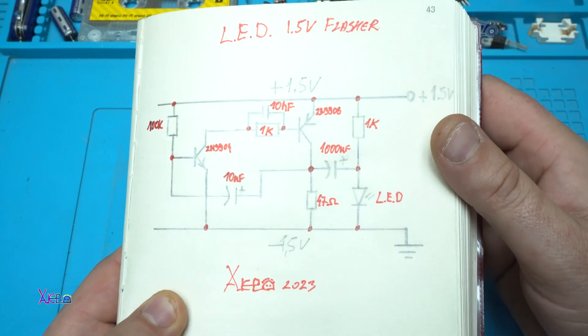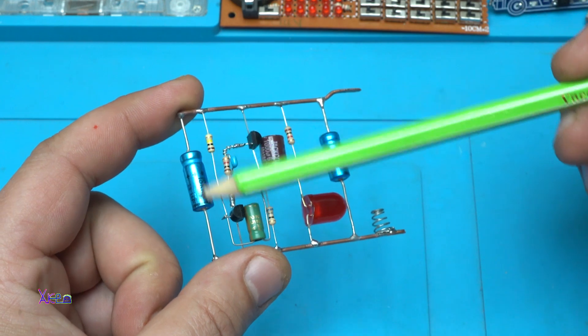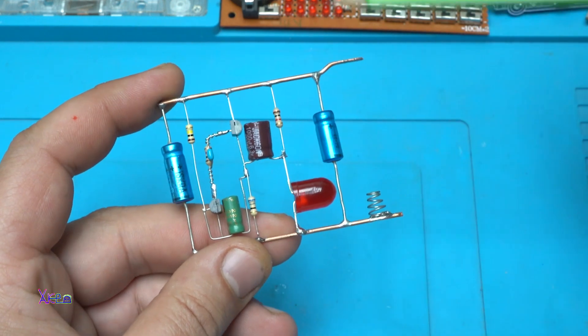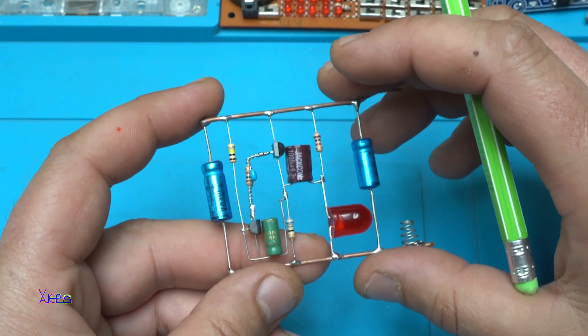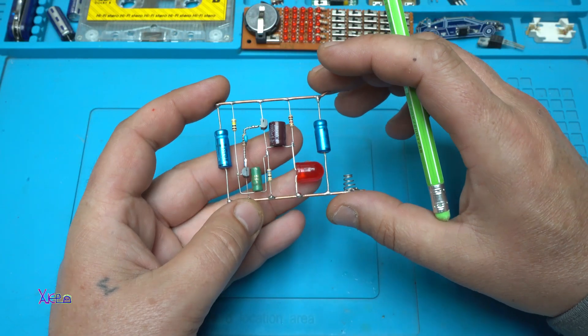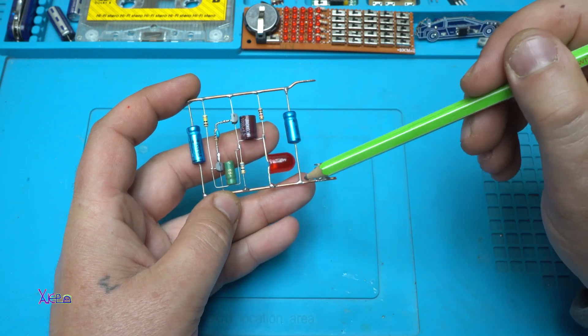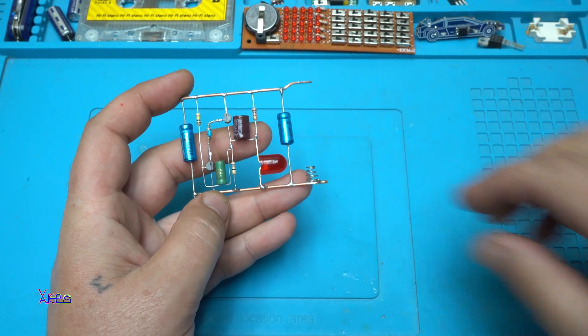The first capacitor and the last capacitor are just for holding the frame and to be more stable. Here are the main components and here will go the battery.